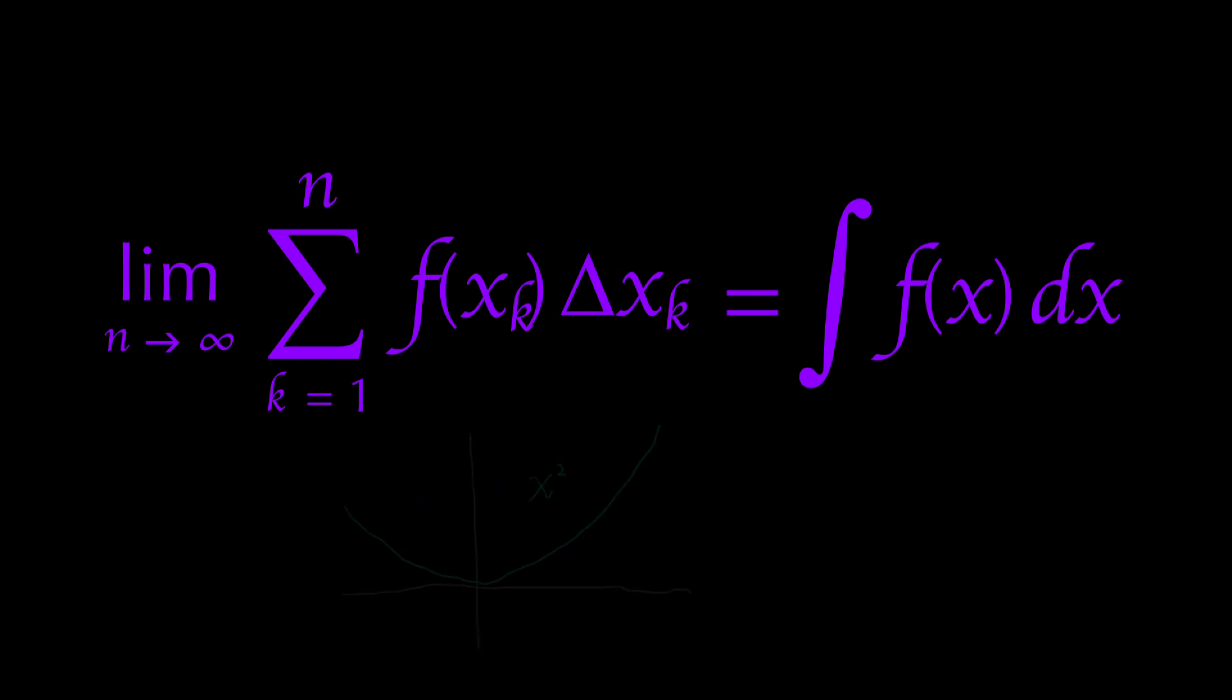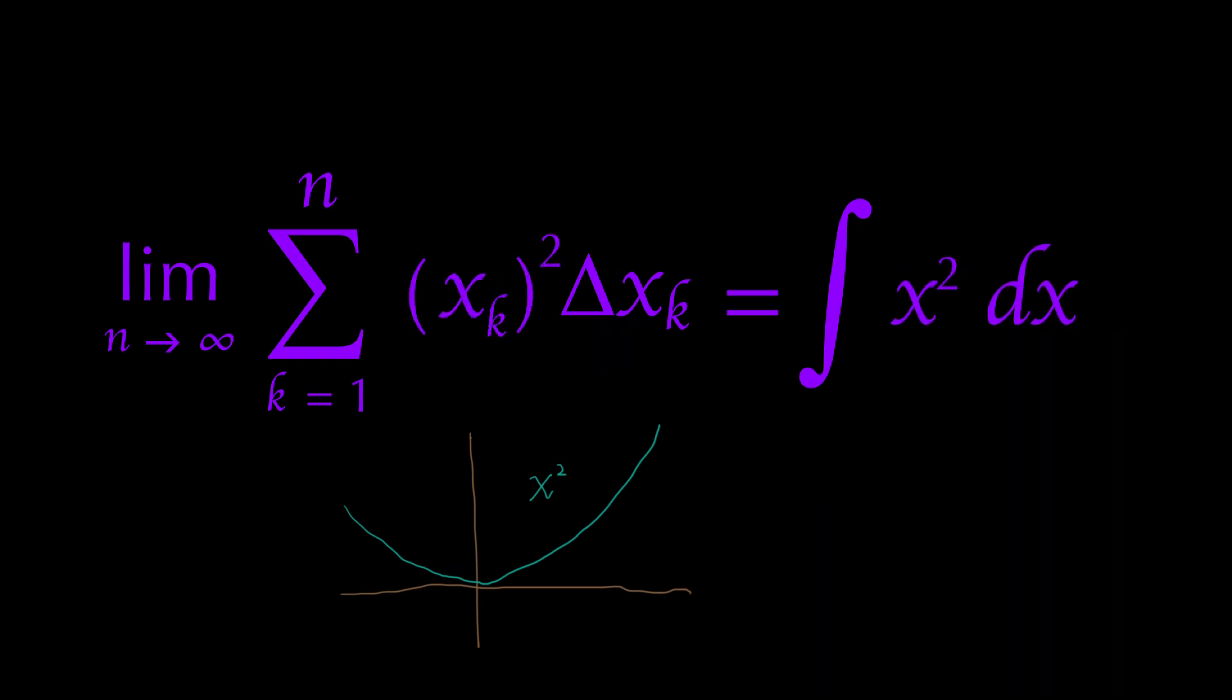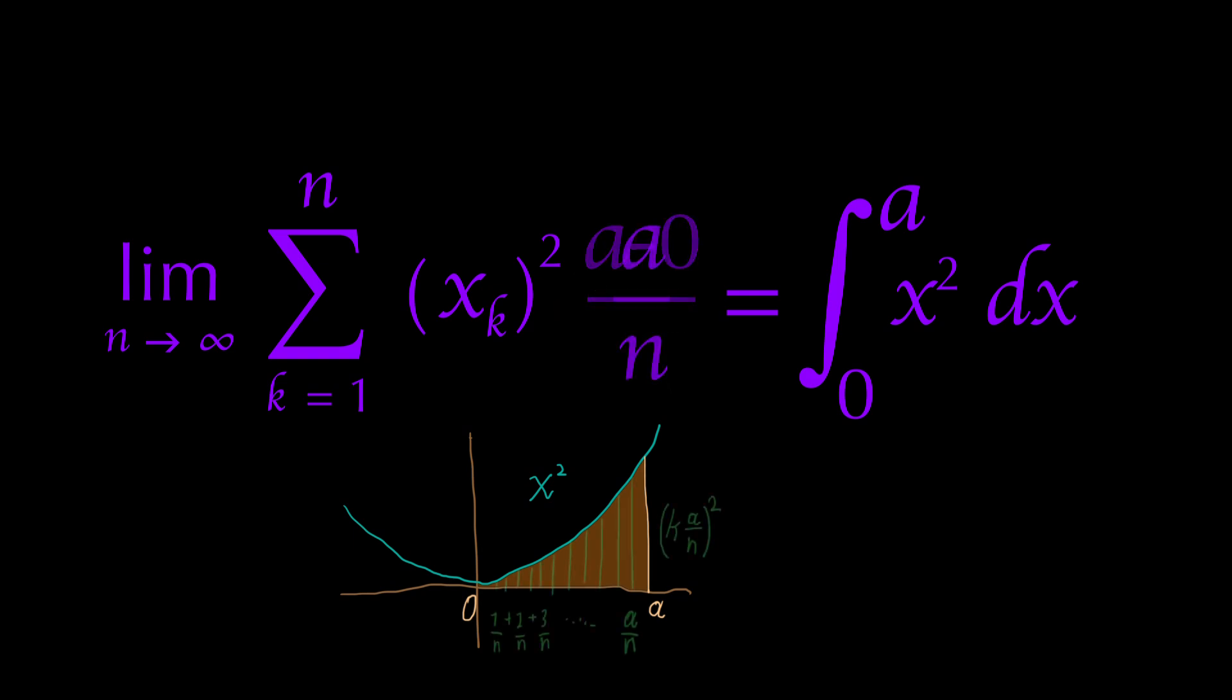For starters, I figured I'd use the classic parabola, making our function into x squared. For the limits of the integral, to make our math simpler, I decided to keep the bottom as 0. And the top, I left as an open variable, as the letter a. Just some random distance of the area under the parabola. Our delta x becomes a minus 0 over n, or just a over n.